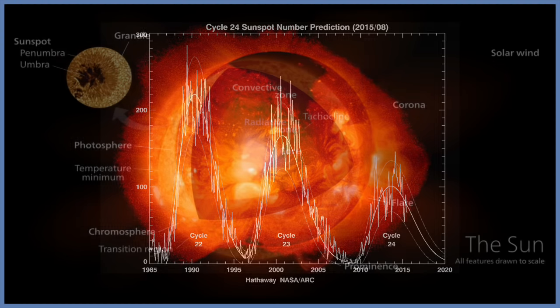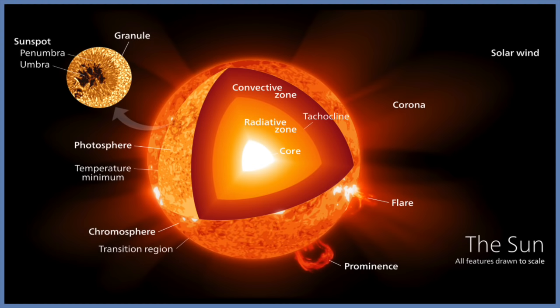The basic structure of the sun can be categorised in several layers. So you've got the core, the radiative zone, the convective zone, the photosphere, the chromosphere, and the corona.